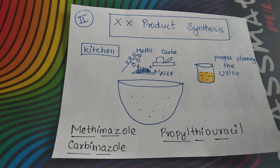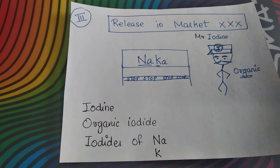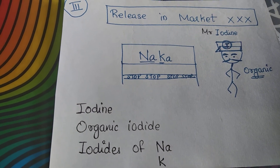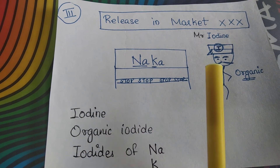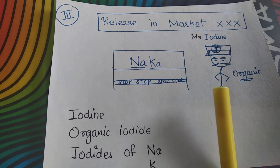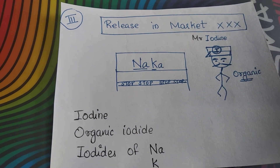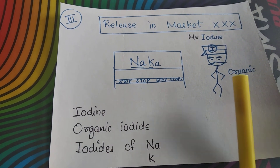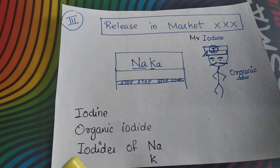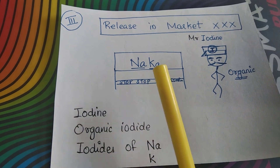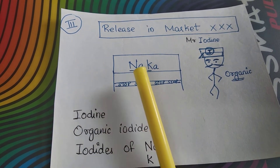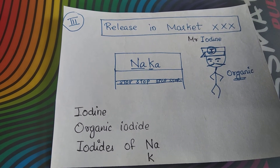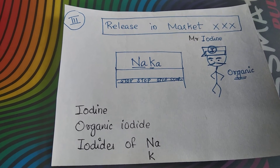This product represents the hormone. The third stage is the product being released in the market. To inhibit this release by nakabandi, we appoint Mr. Iodine who catches organic iodine. So the drug iodine represents iodine itself, organic iodide represents organic iodide, and Naka represents iodides — Na is sodium iodide and K is potassium iodide. So iodine, organic iodide, and iodides of potassium and sodium will inhibit the release of hormone.